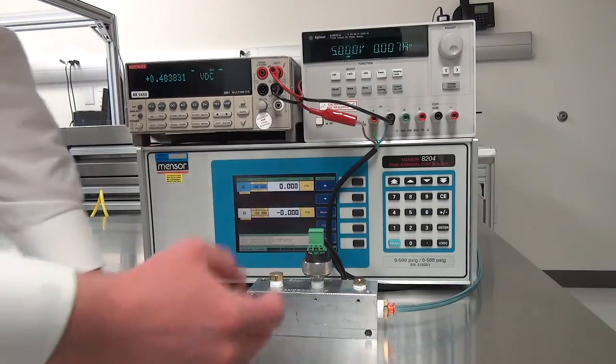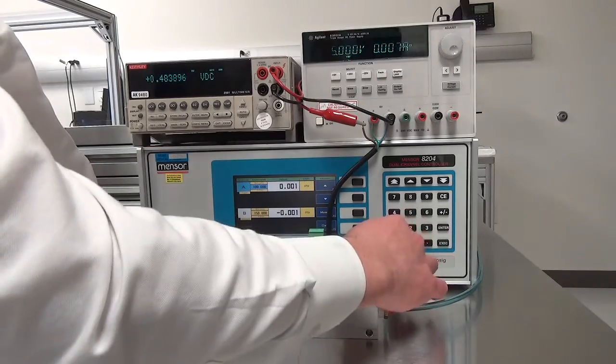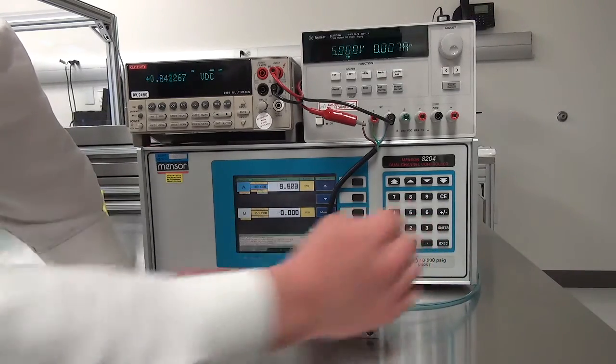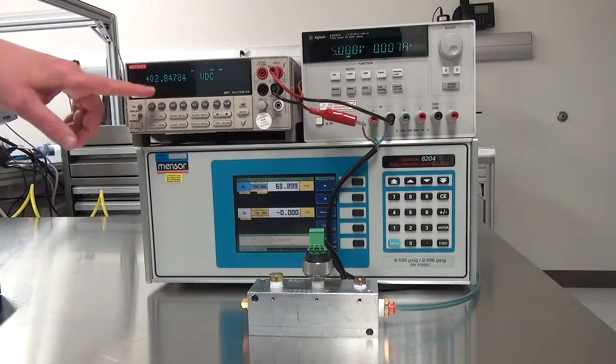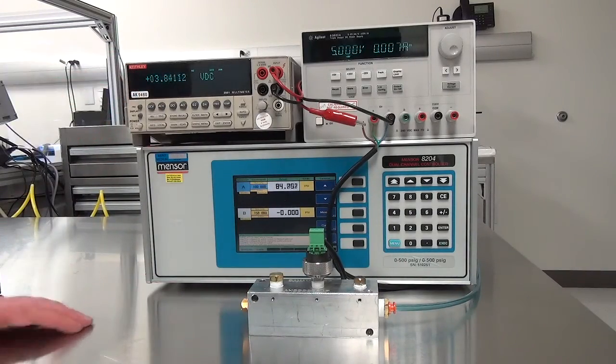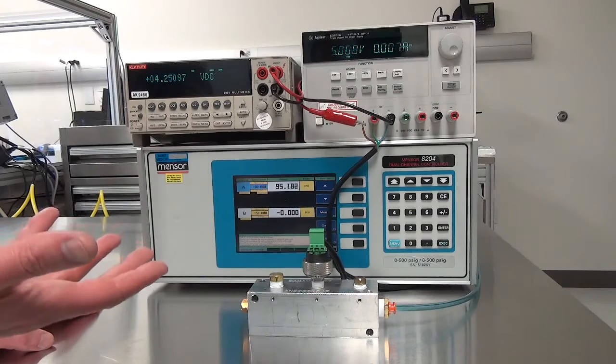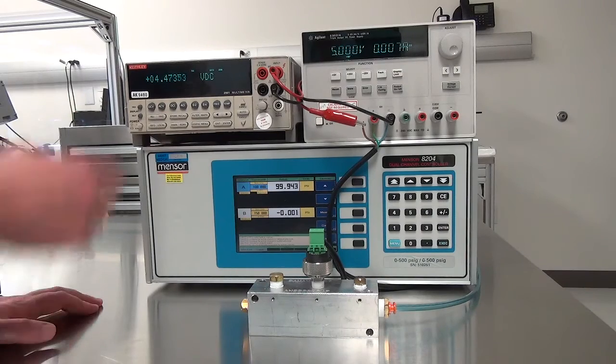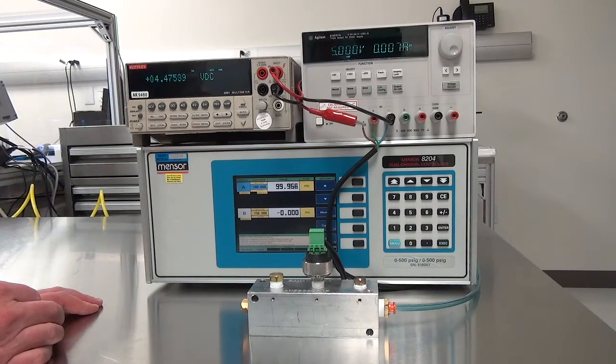Okay and now we're going to apply 100 psi to this 100 psi gauge part. So as it ramps you'll see the output voltage ramping. A 100 psi gauge part should have about 4.5 volts output full scale and here we come to 4.47 volts.